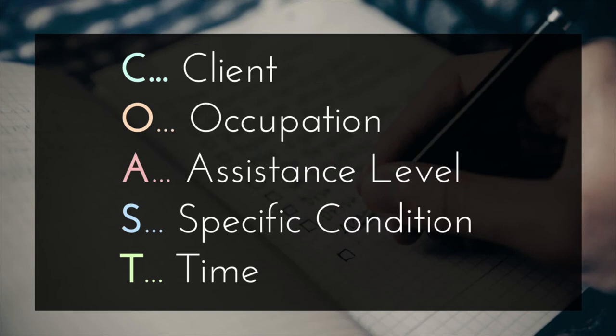As I mentioned before, COAST is an acronym. The C stands for client, meaning who is this goal for? Keep in mind that client can refer to a specific or a single person or even to a whole population group. The O is for occupation — what will this person do or be able to do when they meet this goal? The A is for assistance level, meaning how much help will they need, whether it's physical assistance or some type of verbal cueing or tactile cueing, in order to accomplish the goal.